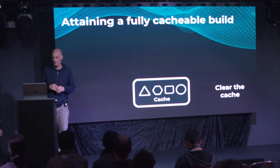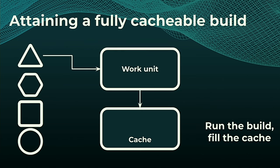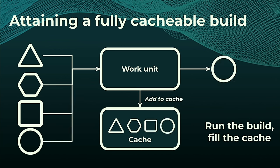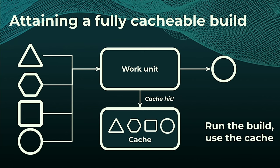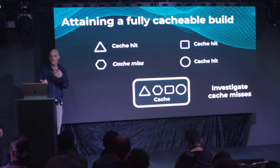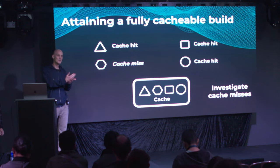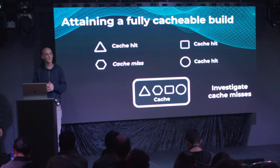Conceptually, before the demo: we start by clearing the cache — remote or local. We run one build, which populates the cache. Then we run the build again; that second build tries to consume from the cache — getting some hits and some misses. When done, we interpret the data using build scans to determine how cacheable the build already is, where it's not, and how much time it costs. That informs an informed decision on whether and how much to invest in optimization.